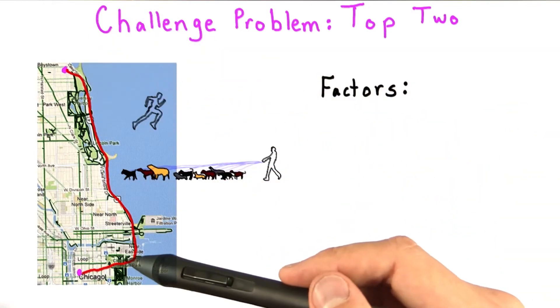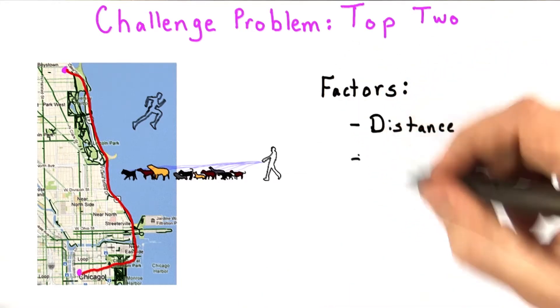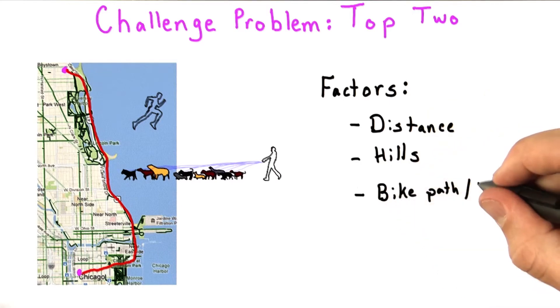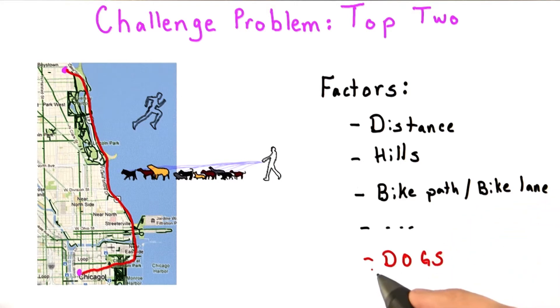The suggested route along Lakeshore might have been based on some factors, such as distance or how hilly the route was, or whether you're on a bike path or a bike lane, and there's probably some other ones, but they don't take dogs into account.